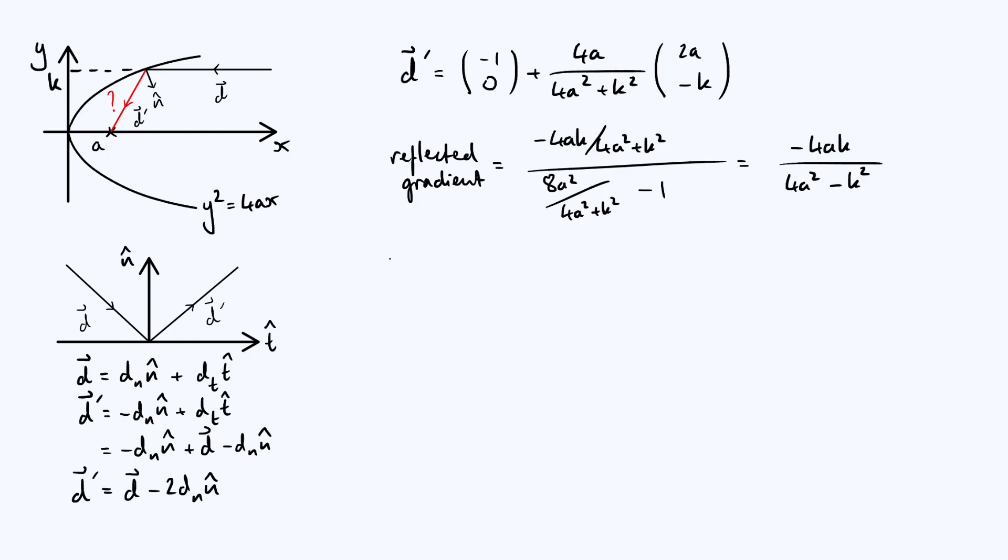Then we can use that to get the equation of the red line. We can use this standard formula, y - y₁ = m(x - x₁), where x₁ and y₁ are the coordinates of a particular point, any point that the line goes through. We know m, m is just the gradient, it's the expression we just derived, so this gives y - k equals all of that stuff, -4ak/(4a² - k²) times x minus something, and the x-coordinate can be obtained from the equation of the parabola. x is just y²/(4a), y is k, and so it's -k²/(4a). So there's the equation of the reflected ray.